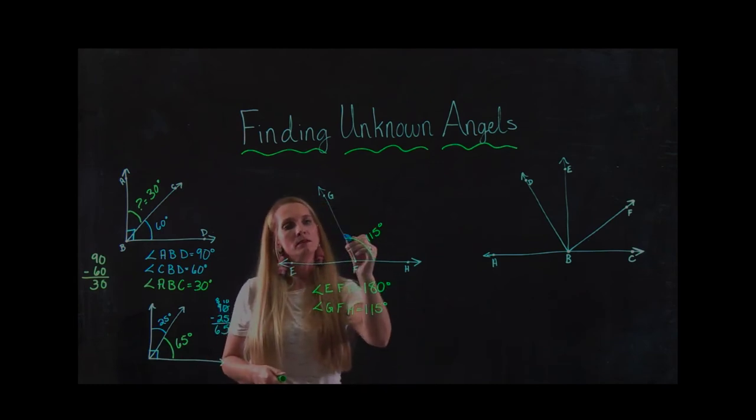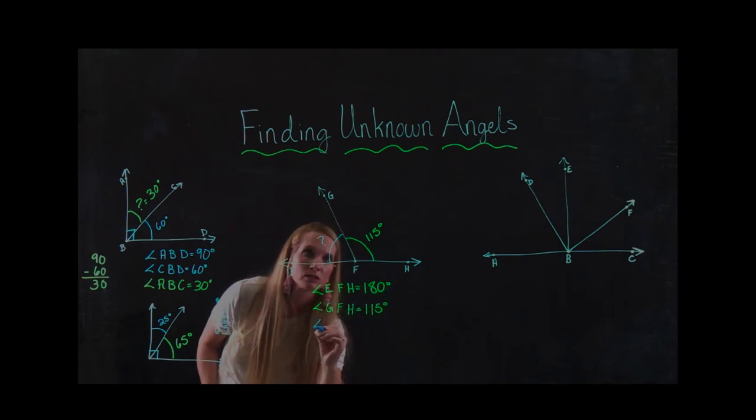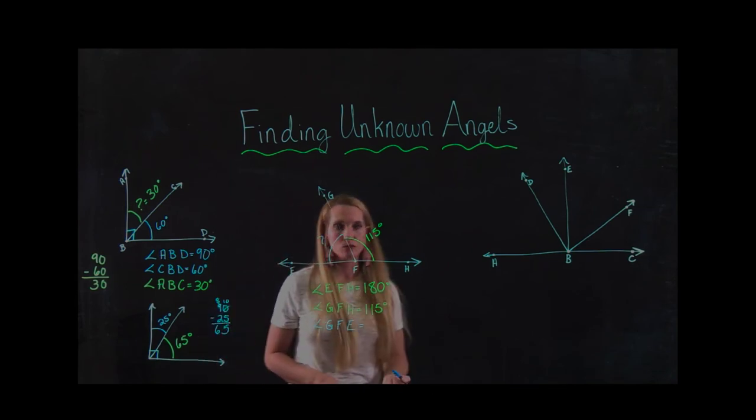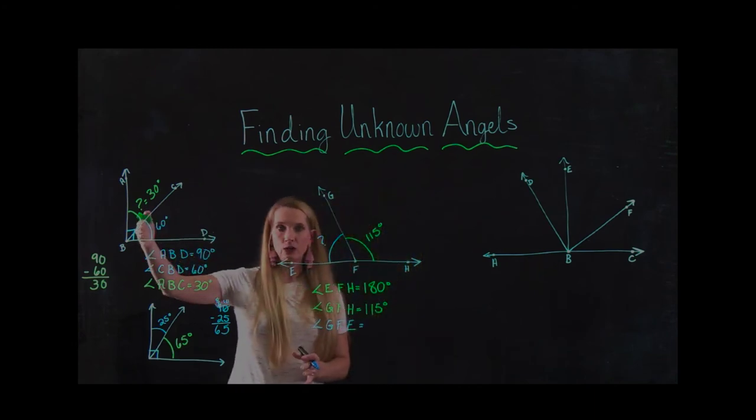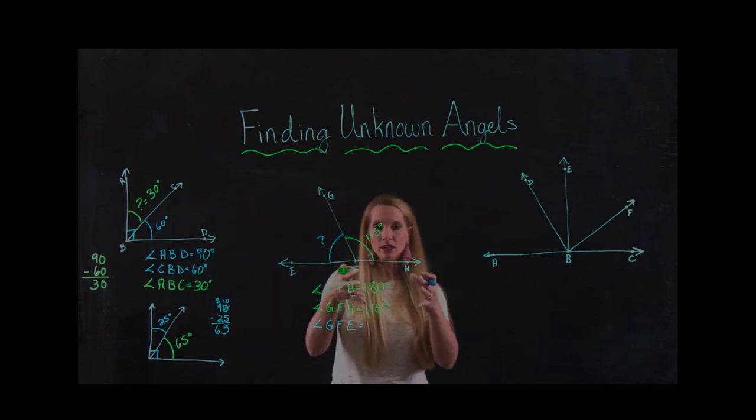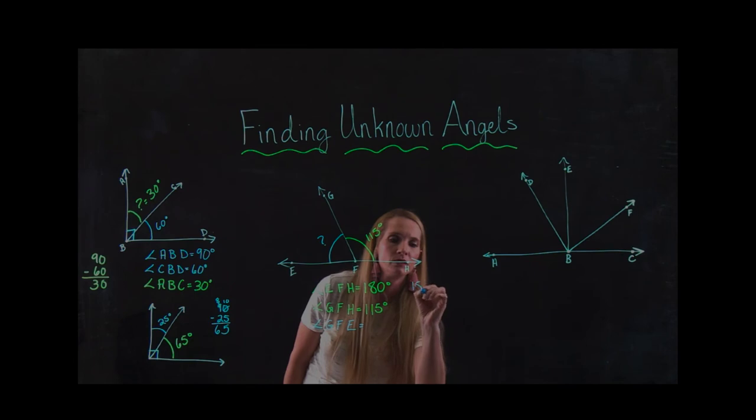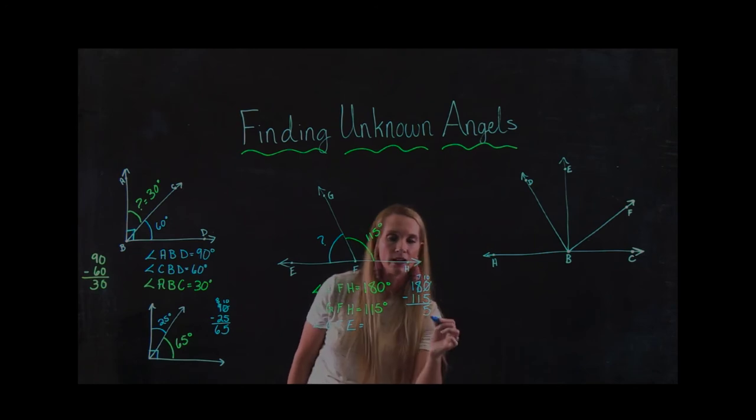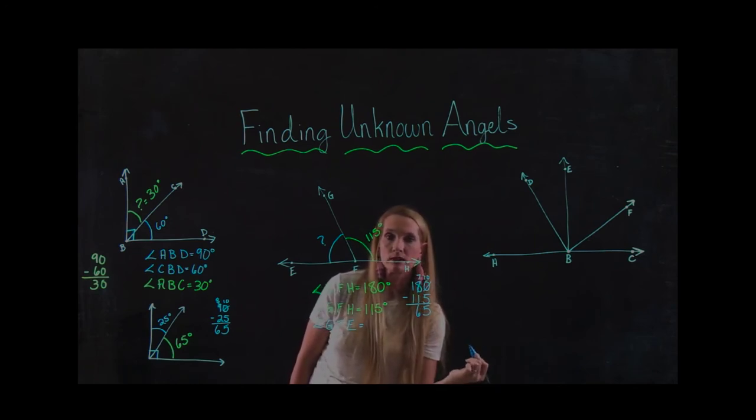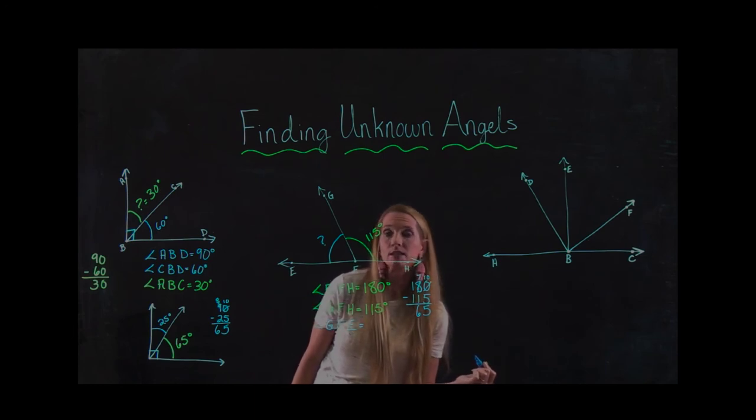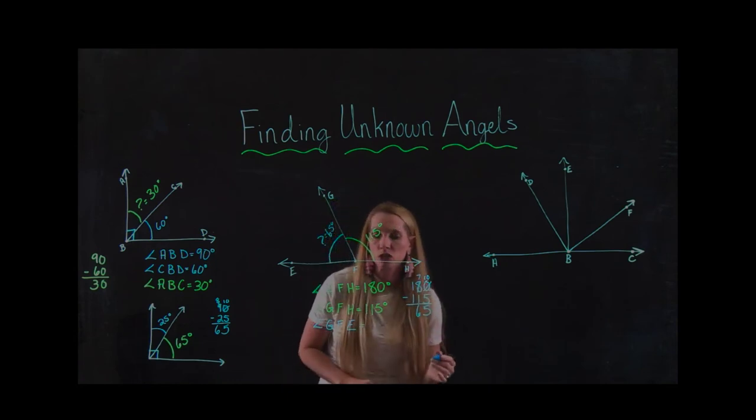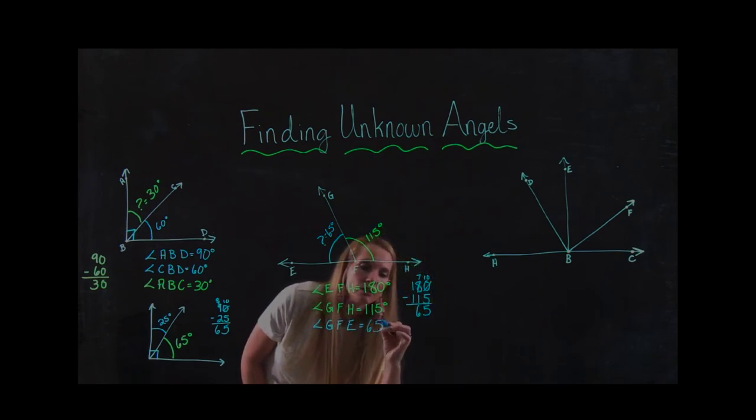So I'm going to say that angle GFH is equal to 115 degrees. Then they want me to find this, which is angle GFE. And that's what they're wanting to find. Well, just like over there, I knew this was 90 degrees, so I could subtract from this. But this is 180 degrees. So now I'm just going to come over here and do the math. 180 minus 115. Go next door. Borrow 10 more. 10 minus 5 is 5. 7 minus 1 is 6. So now I know that my question mark equals 65 degrees. And GFE is equal to 65 degrees.